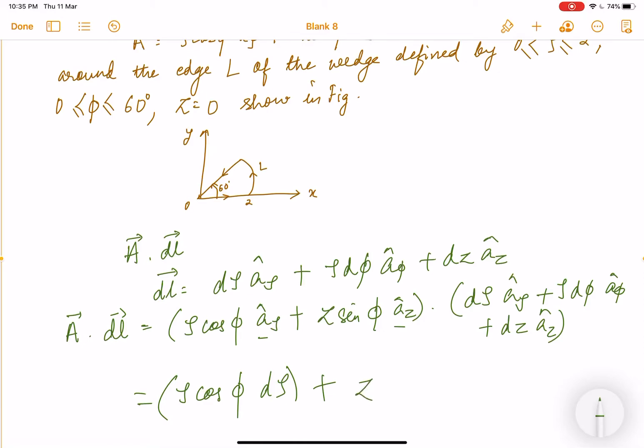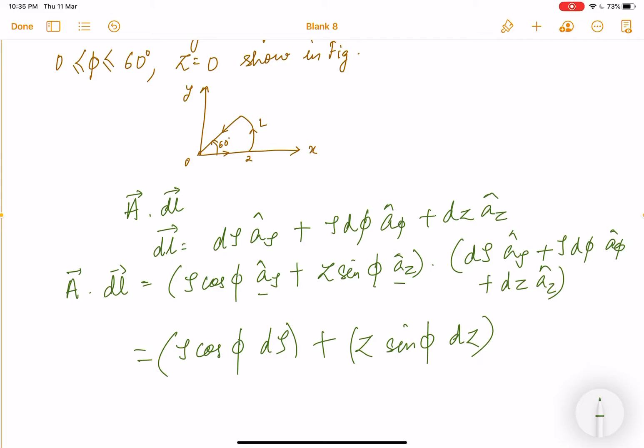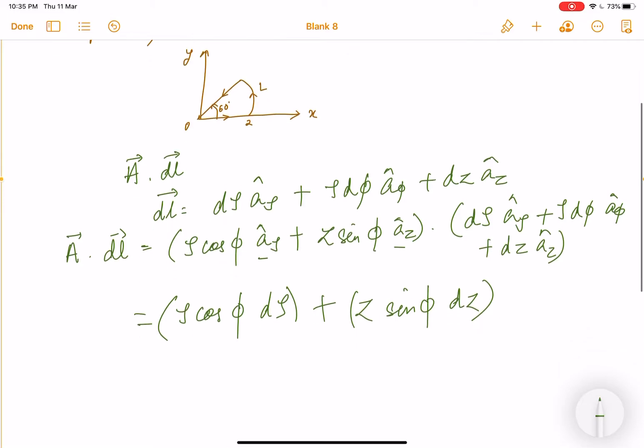z sin φ dz. And as we can see in the picture, and it's also given in the question, z is 0 because everything is in the xy plane. So I'll just put z equals 0. So now my A dot dl will become ρ cos φ dρ.